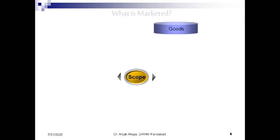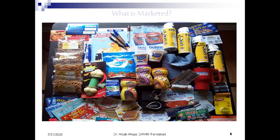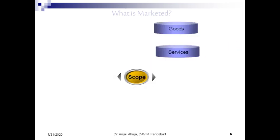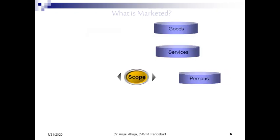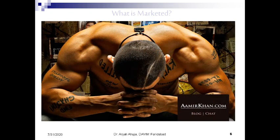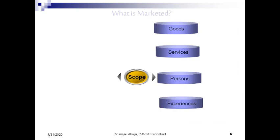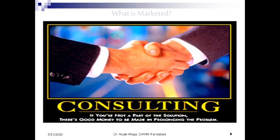The scope of marketing includes various aspects. First are goods — the tangible products available in the market. Then are services, which are intangible, like those provided by doctors and lawyers. Then is the marketing of persons — whenever the name of a famous personality is marketed, that is marketing of an individual. There are also experiences, which are marketed through consulting firms that charge for their services and sell their experience.